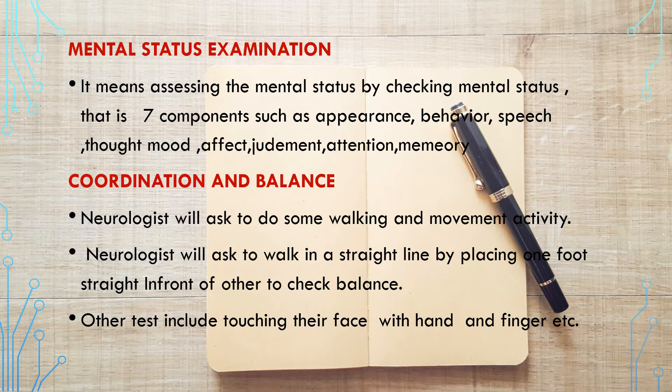Seven major components will be checked in mental status examination. They are appearance, behavior, speech, thought, mood, affect, judgment, attention, and memory. Regarding how to do or write a mental status examination, I have already uploaded a video — you can check it on the channel.